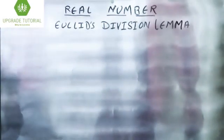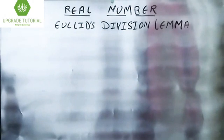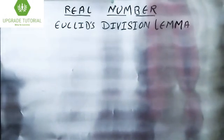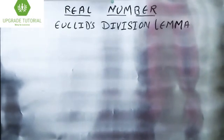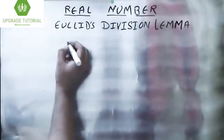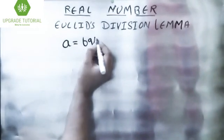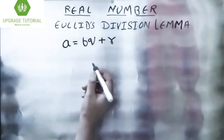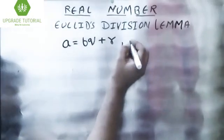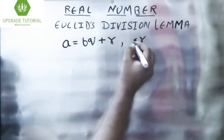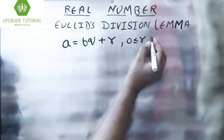Hello everyone. In this chapter we are going to learn about Euclid's Division Lemma. When two integers are given, suppose a and b, then there exist unique integers q and r which satisfy the equation a = bq + r, where r is greater than or equal to 0 but less than b.